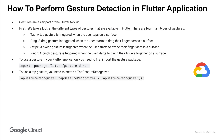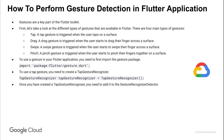To use a tap gesture, you need to create a tap gesture recognizer. This can be done by adding an instance of tap gesture recognizer to your code. Once you have created a tap gesture recognizer, you need to add it to a gesture recognizer detector. This can be done by adding the following line to your code.